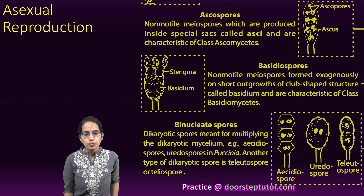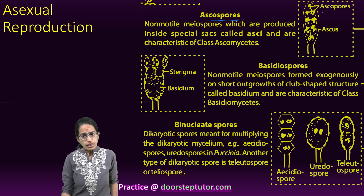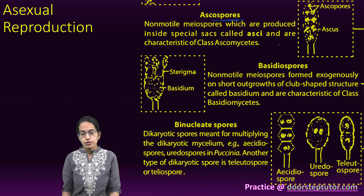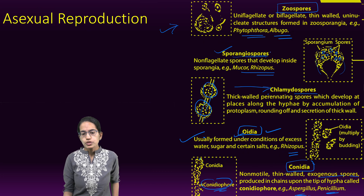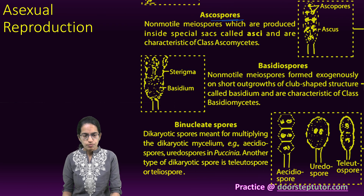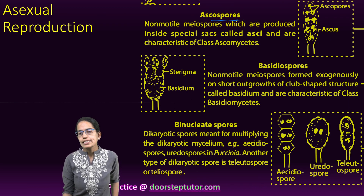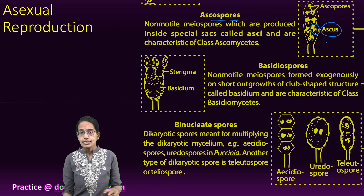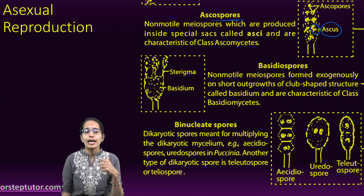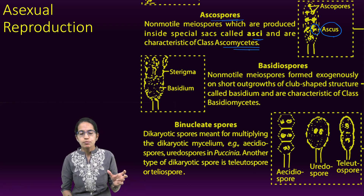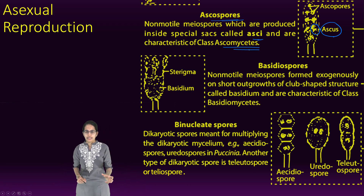The next is Ascospores — very important. They are again non-motile, the same as sporangiospores, which are also non-motile in the case of Mucor and Rhizopus. Ascospores are produced in sacs, and these sacs are known as asci — ascus is the singular form, asci the plural — and the class of fungi which reproduces by this is Ascomycetes.